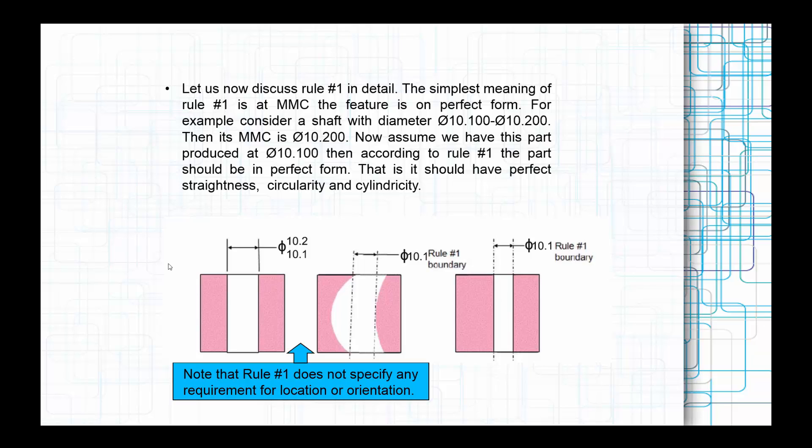The simplest meaning of Rule Number 1 is at MMC, the feature is in perfect form. At MMC, the feature has to be at the perfect form. For example, we are considering a shaft with a diameter of 10.1 to 10.2. Within that it will vary.